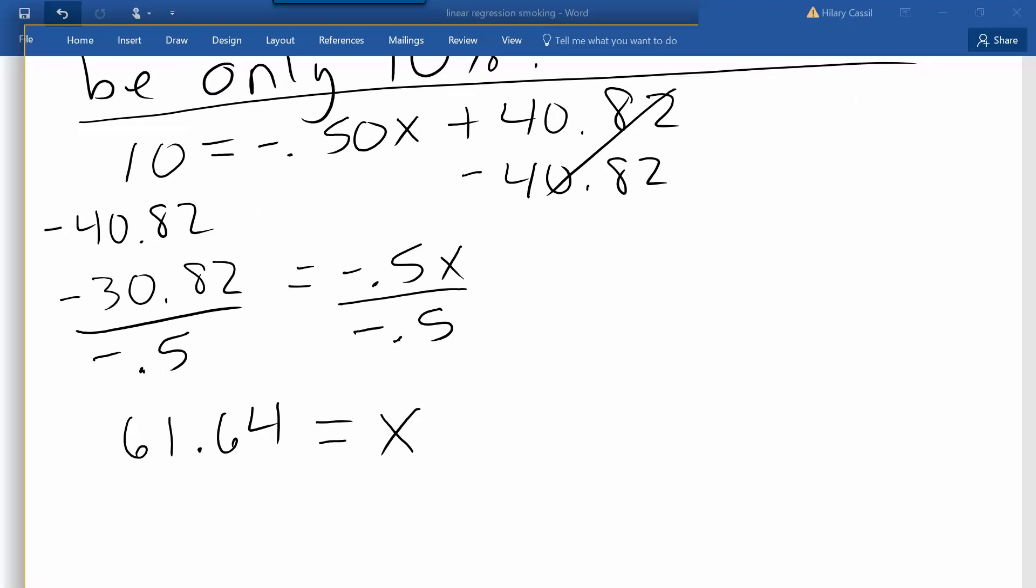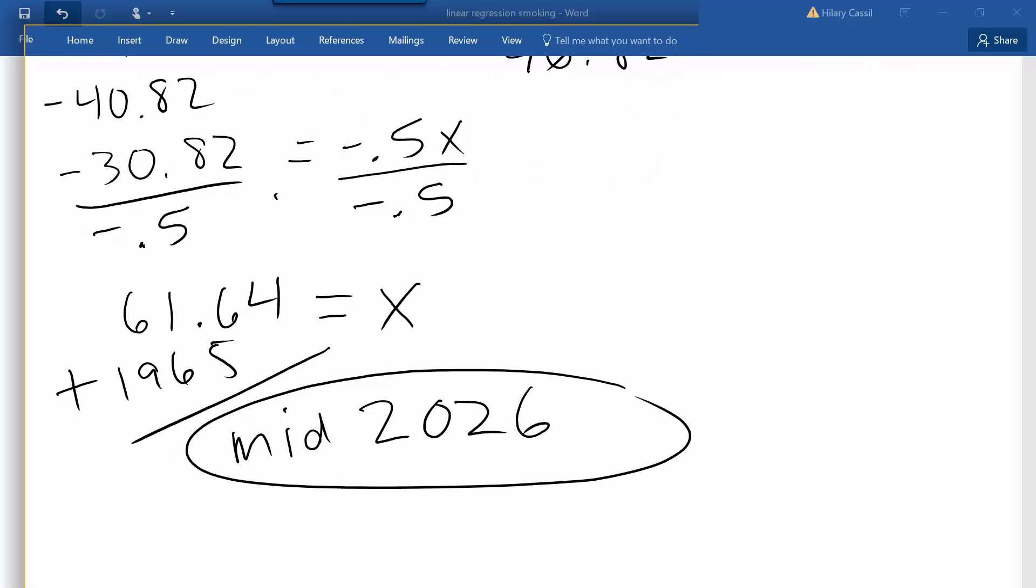And we get a value of about 61.64. So remember, our x values represented years since 1965, so adding this value to 1965, a good answer here might be that mid to late 2026 is when the percentage of adult smokers in the U.S. will be down to only 10 percent.